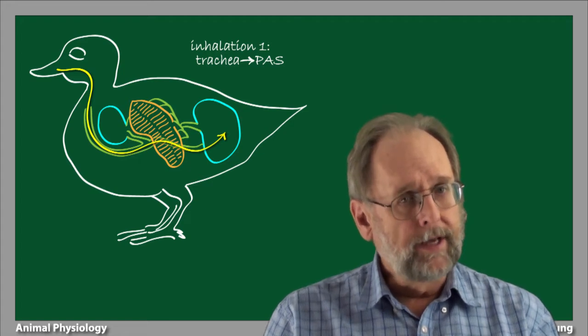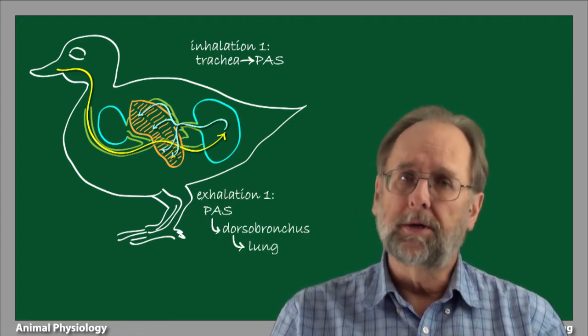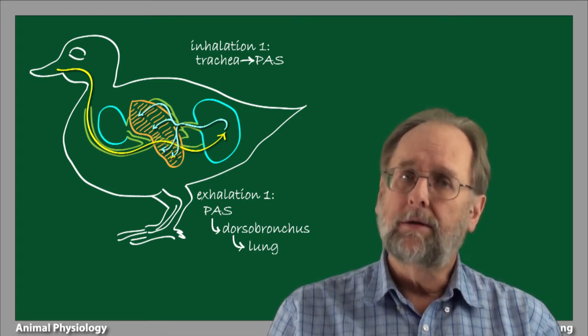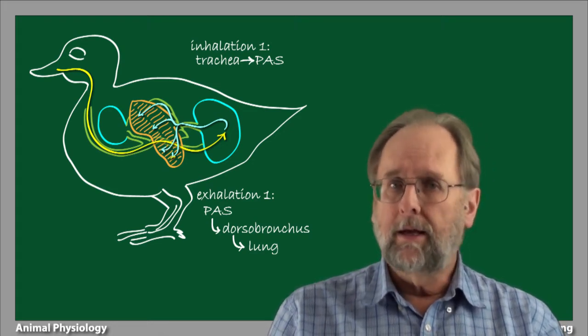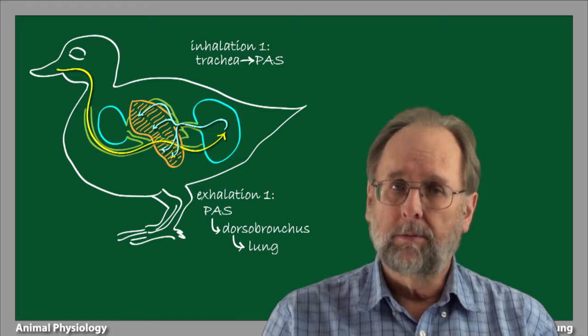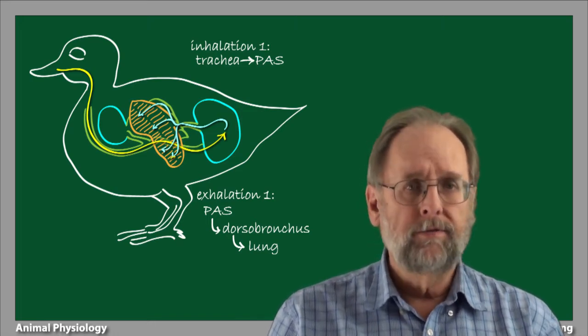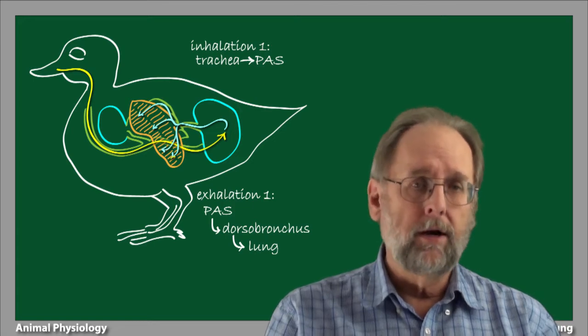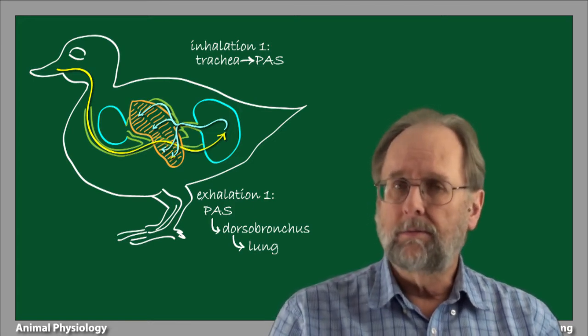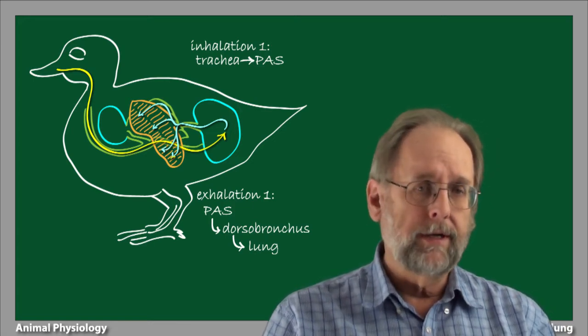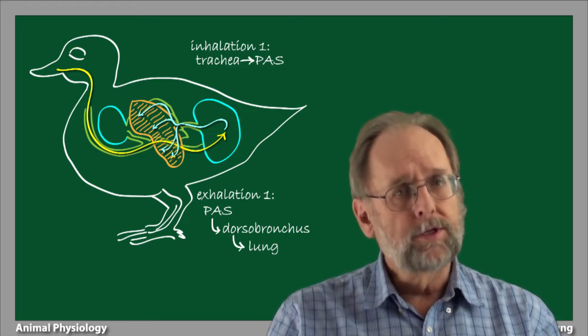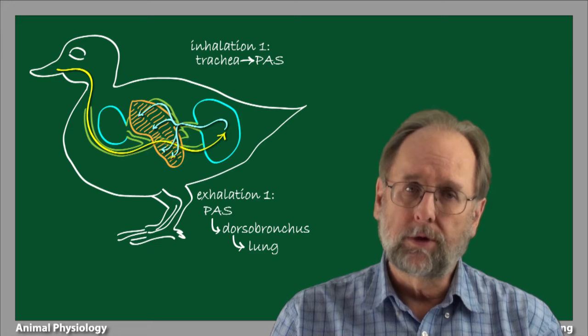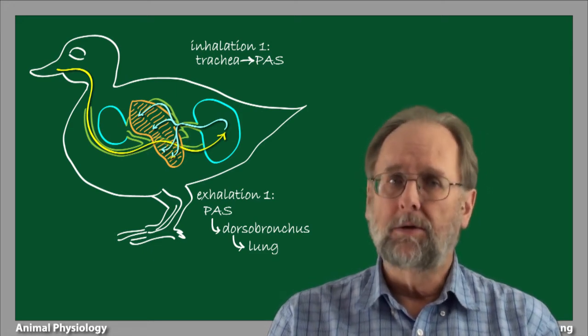During the exhalation phase of the first respiratory cycle, air from the posterior air sacs is distributed through the dorsal bronchus and down through the lung through the parabronchi. During this phase, oxygen and carbon dioxide are exchanged between the air and blood. The motive force here is the upward rotation of the sternum about the pectoral girdle, again a sort of bellows action.